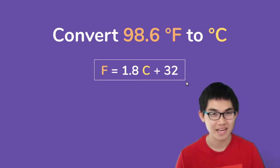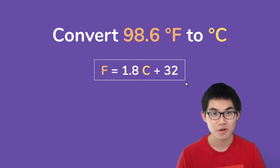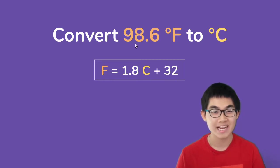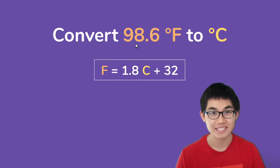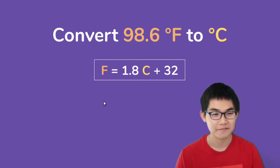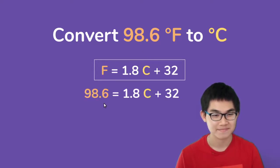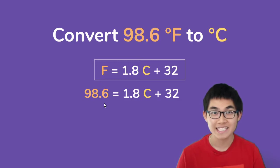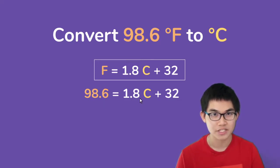Now let's try converting from 98.6 degrees Fahrenheit into Celsius. We can use the same formula, and this time we're looking for C. We know that F is 98.6, so we can substitute that number into F.